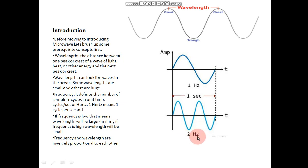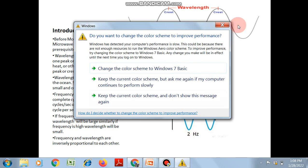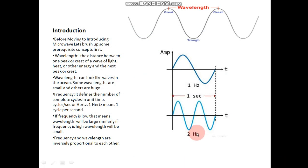Hertz is a scientist's name given as a unit to frequency, because he was a great scientist who worked in the area of waves and frequency. So hertz means per second. Two cycles per second means two hertz is the frequency, and one cycle per second means one hertz is the frequency.